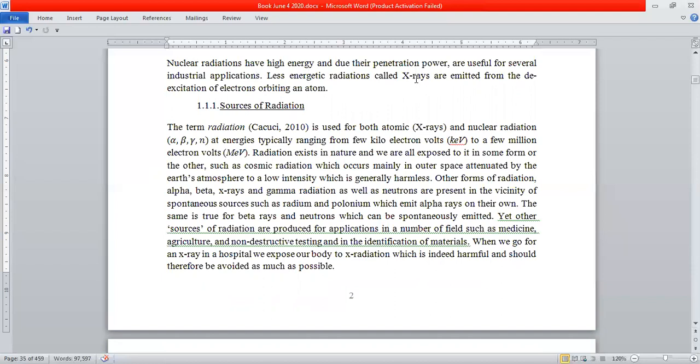X-rays we're all familiar with—we go to a hospital, we stand in front of an X-ray machine, and we have a plastic sheet behind us. If there's a fracture in our bones, the X-ray goes through and an image is made at the back from which the doctor can tell whether you have no fracture, a hairline fracture, or a serious fracture. If you look at the Handbook of Nuclear Engineering edited by Kakuchi 2010, you'll see that this term 'radiation' is used for both atomic and nuclear radiation. Nuclear radiation—alpha, beta, gamma, and neutrons—come out typically with energies of MeV, and X-rays come out with keV.